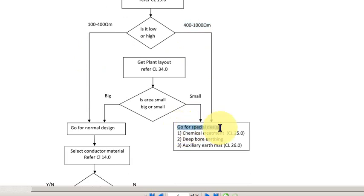Then you have to go for special design. When I say special design, you have to go for chemical treatment, or you have to go for deep bore earthing, or you have to go for auxiliary earthman. Now, these extra things are required to achieve a low resistance in spite of high resistivity.